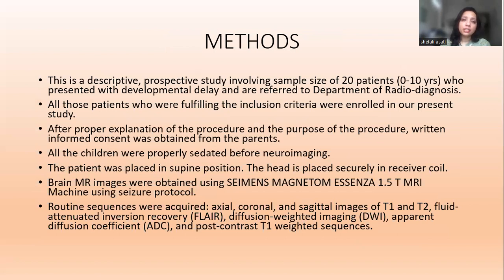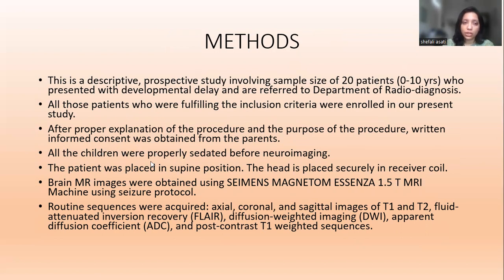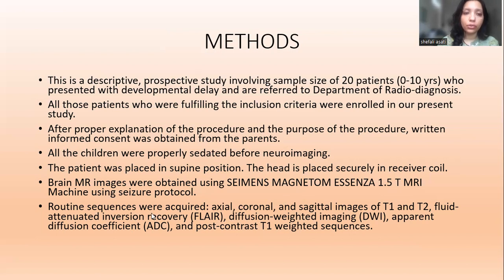Methods. This is a descriptive prospective study involving a sample of 20 patients aged 0–10 years who presented with developmental delay and were referred to the Department of Radiodiagnosis. All patients fulfilling the inclusion criteria were enrolled. After proper explanation of the procedure, written informed consent was obtained. All children were properly sedated during neuroimaging. Patients were placed in supine position with the head secured in the brain receiver coil. Brain MR images were obtained using a 1.5 Tesla MR machine. Routine sequences acquired included axial, coronal, sagittal T1, T2, FLAIR, DWI-ADC, and post-contrast T1-weighted sequences.